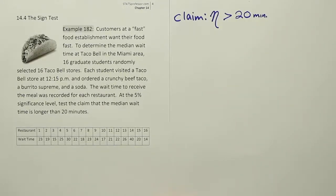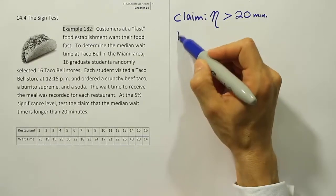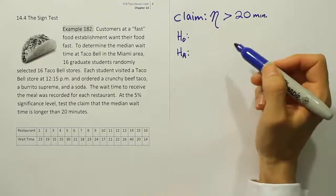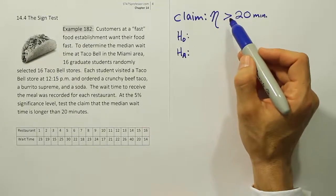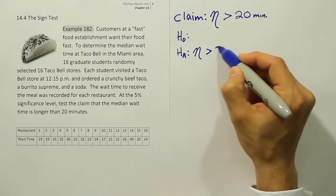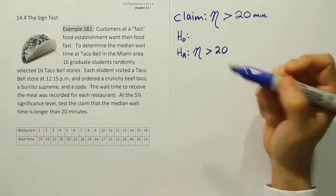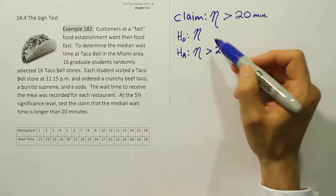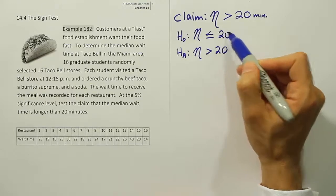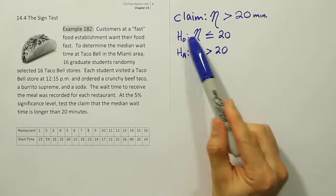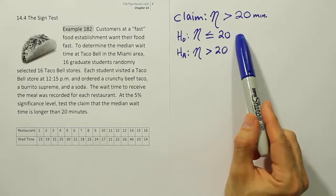From the claim we can derive H0 and HA. Remember that the same rules apply in almost every hypothesis testing scenario. If you have a greater than symbol in the claim, it makes it the same as HA. Then H0 has to express the opposite relationship. What's the opposite of greater than? If you're not greater than, you must be less than or equal to — the complementary relationship. If you're not greater than 20, you must be less than or equal to it.